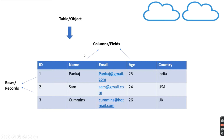Now coming back to Salesforce — a table is represented by an object in Salesforce, and a column is represented as fields, whereas rows in a table are represented as records of an object. For example, if we need to store data of a student, we will create a custom object named Student. Then to represent the columns we create fields, and to represent rows we create instances of objects.